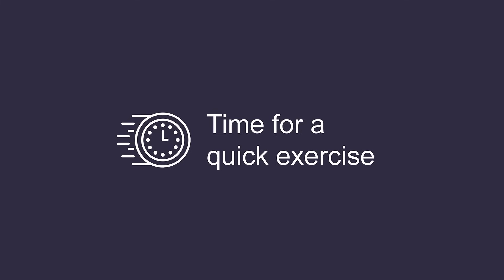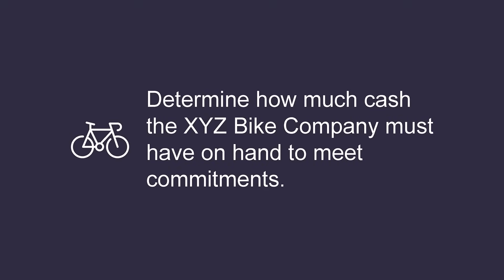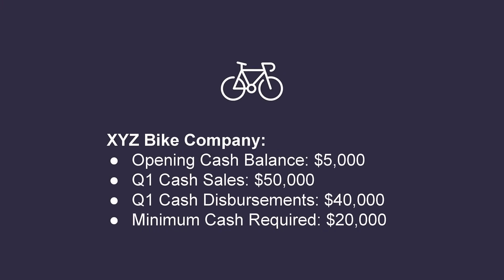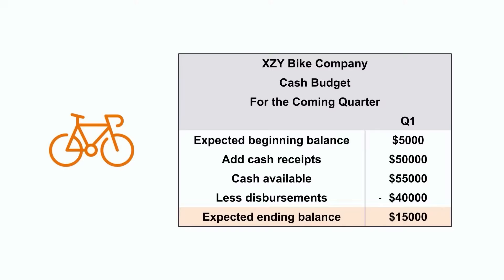Let's look at an example of how a company would prepare their cash budget. With a cash budget we're trying to determine how much cash the XYZ bike company is expecting to have on hand at the end of each period so that they can make sure they have enough to meet their commitments. In quarter one, XYZ bike company is expecting an opening cash balance of five thousand dollars, cash sales of fifty thousand dollars, cash disbursements of forty thousand dollars, and a minimum cash requirement of twenty thousand dollars. Adding the fifty thousand dollars in cash sales gives a total cash available of fifty-five thousand dollars.